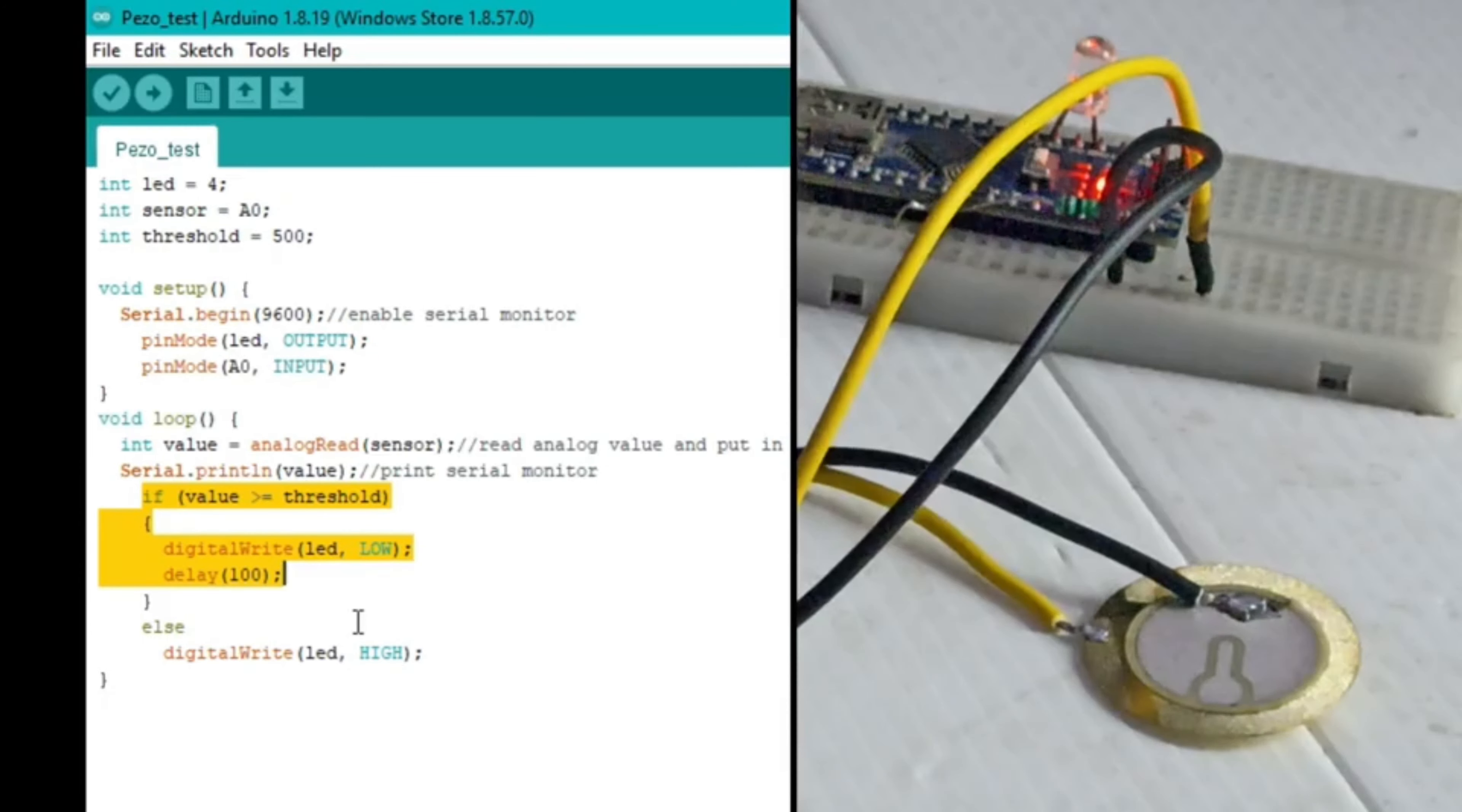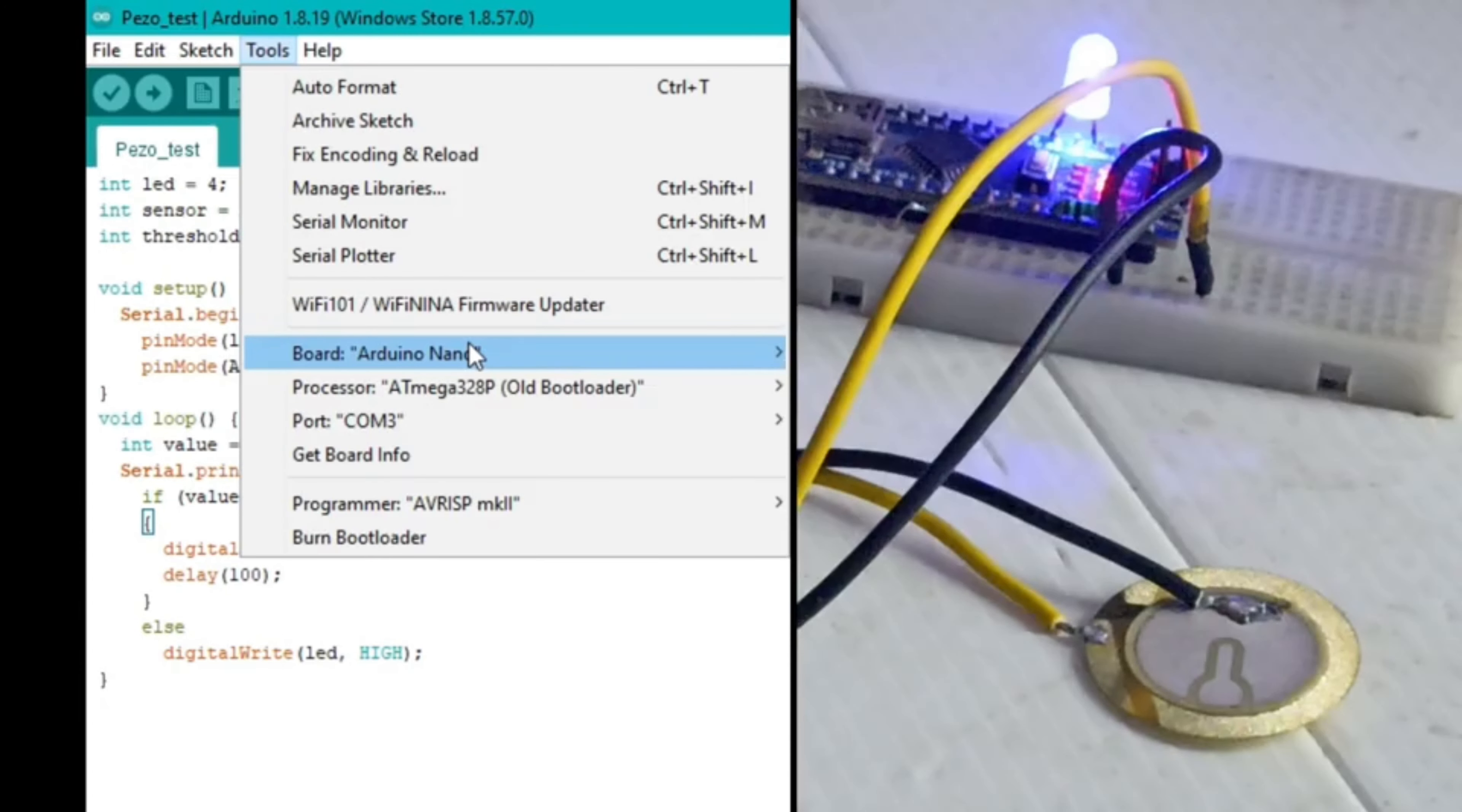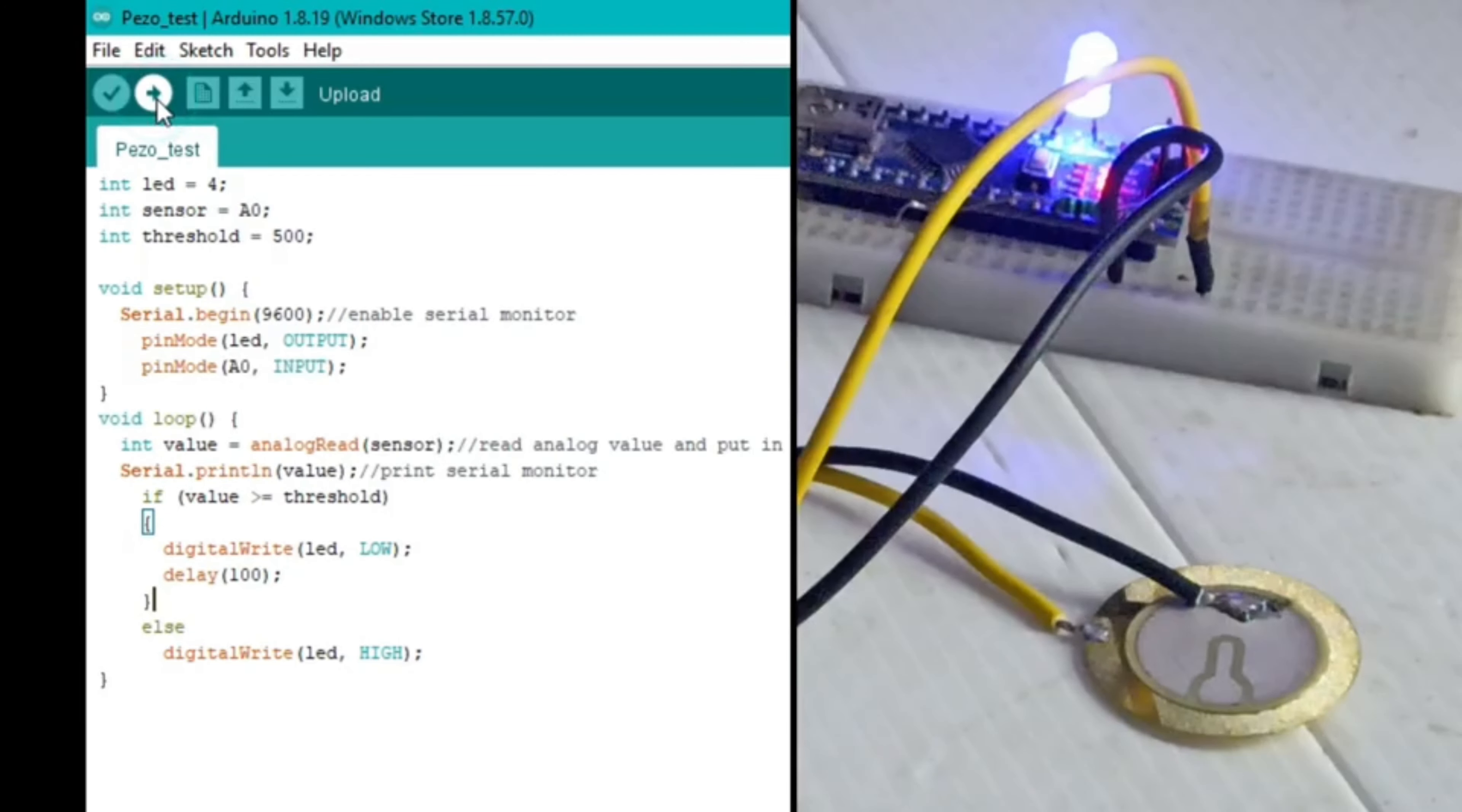Now here select the board as Arduino Nano and select a COM port and then upload the code to your Arduino Nano. This will take some time. After that we are going to check the output in the serial monitor.